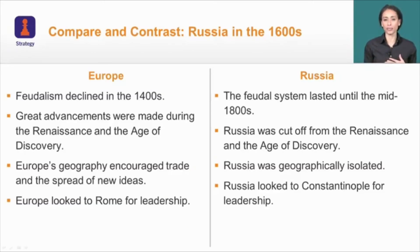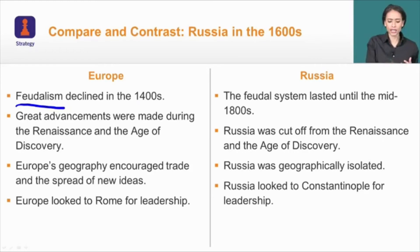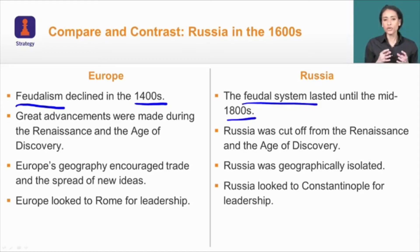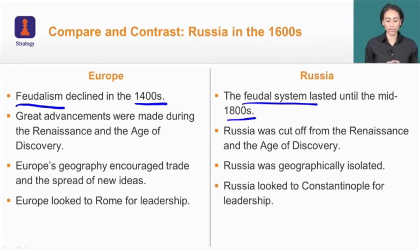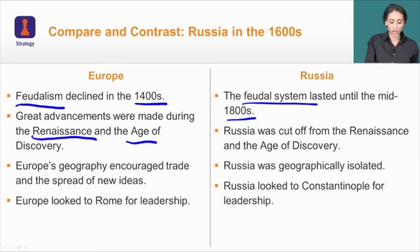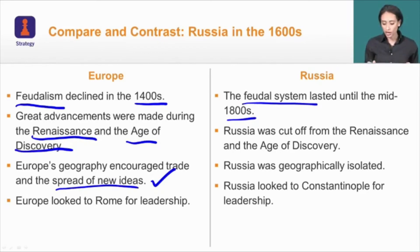As Russia moves closer to absolute rule in the late 17th century, it gives us an opportunity to compare what's happening in Russia with the rest of Europe. Throughout Europe, feudalism had been in decline since the 1400s, but in Russia the feudal system lasted until the mid-1800s. The feudal system is one in which serfs or peasants work land with very few rights — very similar to enslaved people of the Americas — lasting well into the 19th century in Russia, making for very different political systems from the rest of Europe.